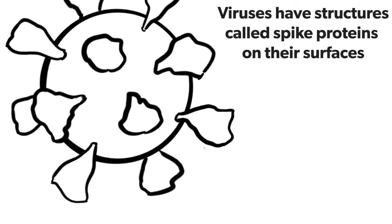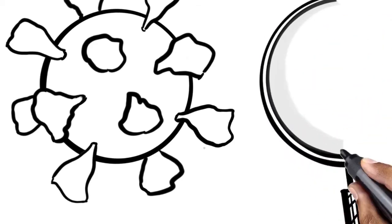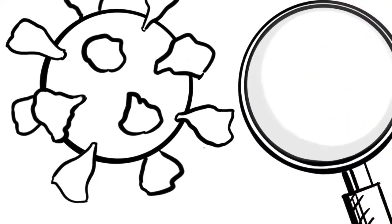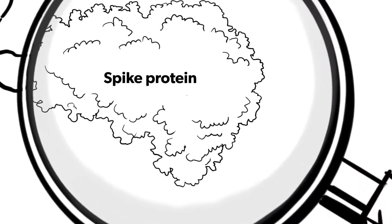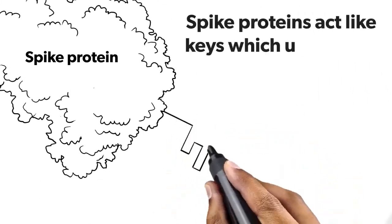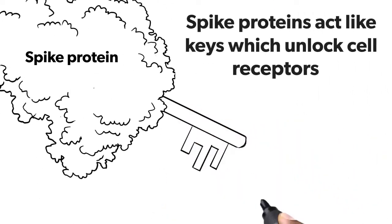Viruses have structures called spike proteins on their surfaces. Spike proteins act like keys which unlock cell receptors.